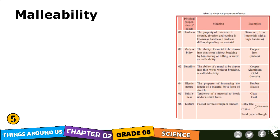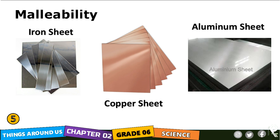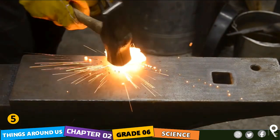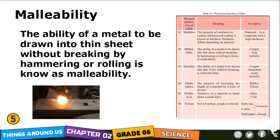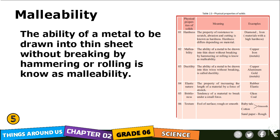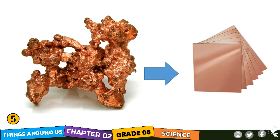The second property is malleability. Have you seen sheets like iron sheets, copper sheets, and aluminium sheets? Those are made by making the metal flat. The ability of a metal to be drawn into thin sheets without breaking, by hammering or rolling, is known as malleability. You can turn copper or iron metal into sheets — that property is called malleability.